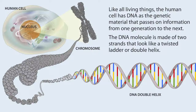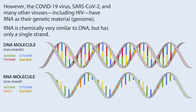Like all living things, the human cell has DNA as the genetic material that passes on information from one generation to the next. The DNA molecule is made up of two strands that look like a twisted ladder, or double helix. However, the COVID-19 virus, SARS-CoV-2, and many other viruses including HIV, have RNA as their genetic material. RNA is chemically very similar to DNA, but has only a single strand.